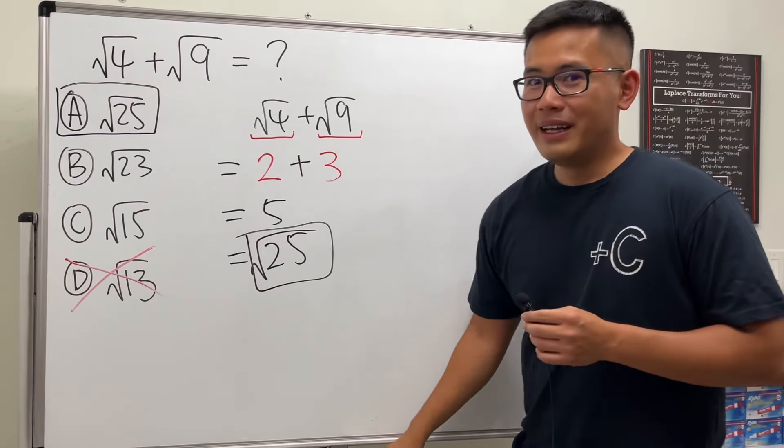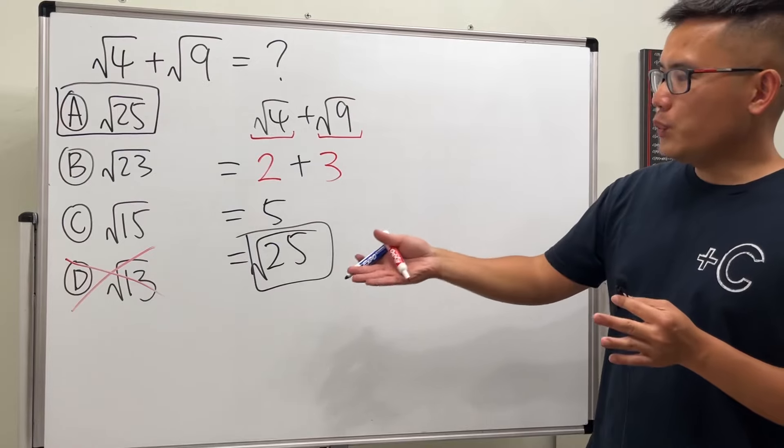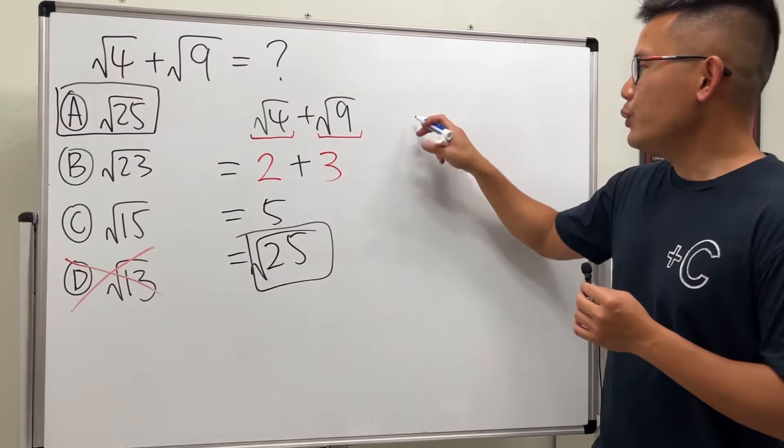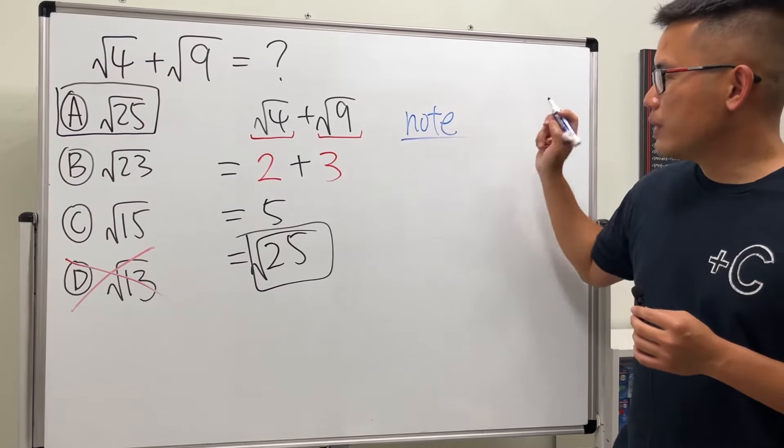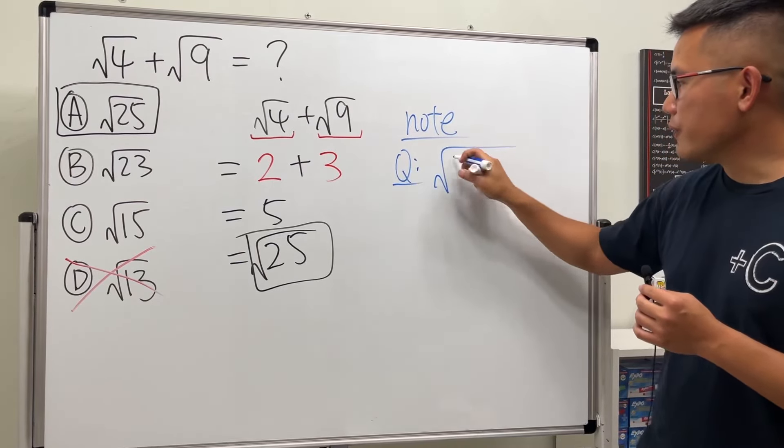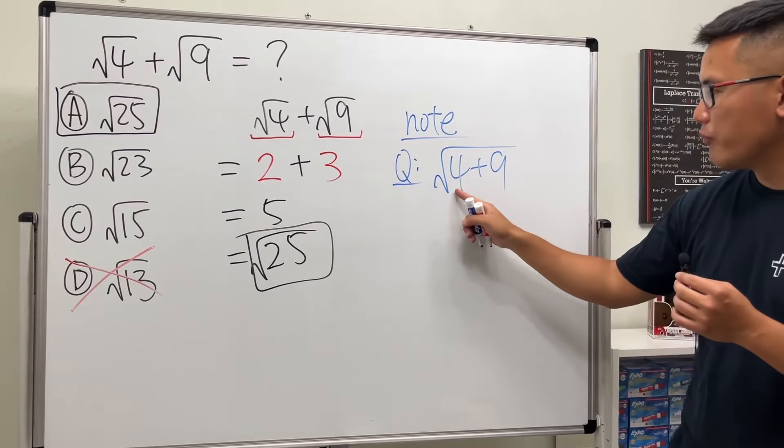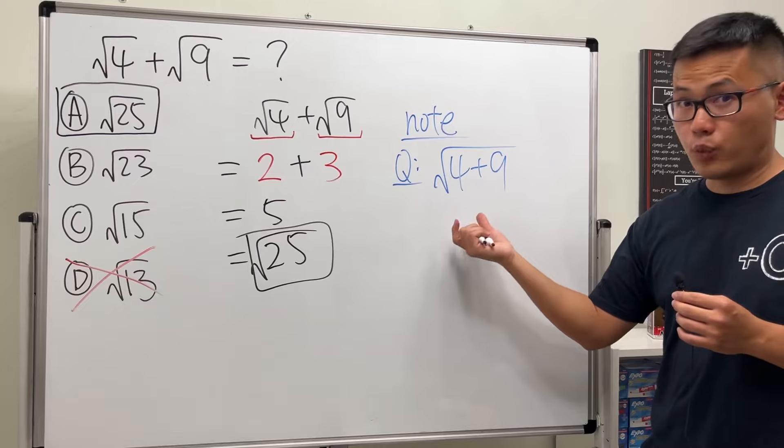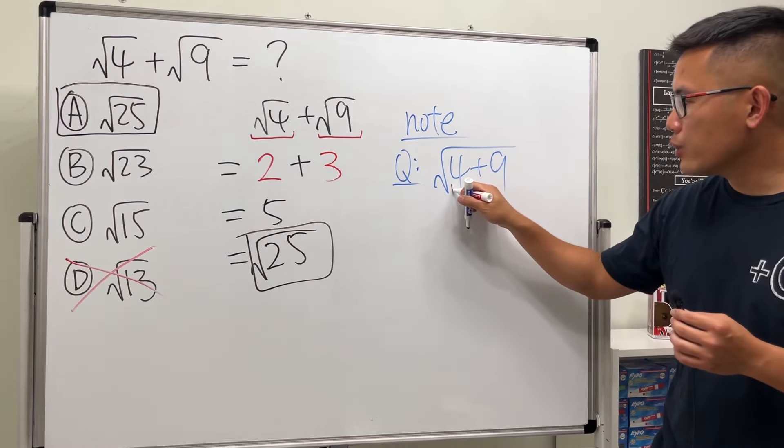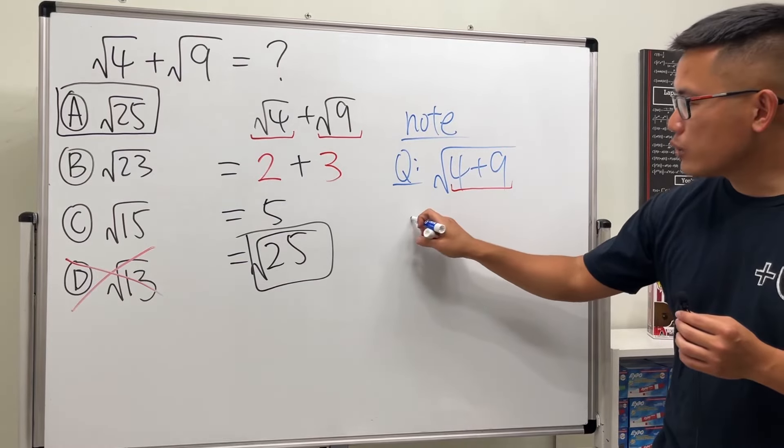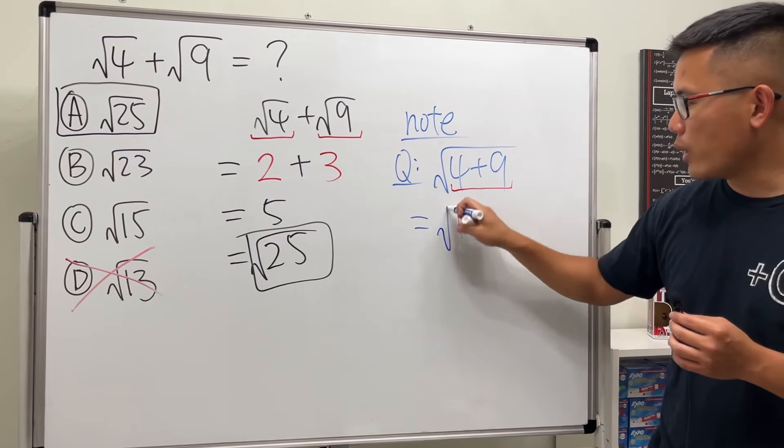All right, so this is it. If you really want to add the numbers inside, then you will have to write things like this: if the question was square root of 4 plus 9, notice how we have the 4 plus 9 inside of the square root. If we have this, then we are going to add them up first, so this right here will be 4 plus 9, which is 13, and then we take the square root.